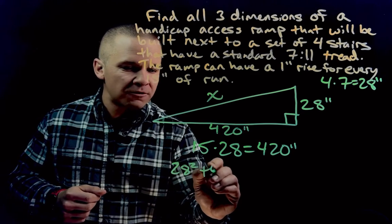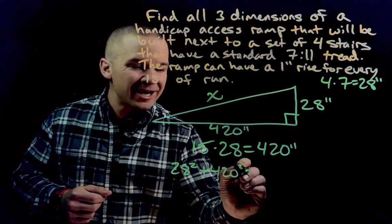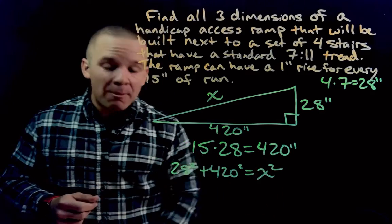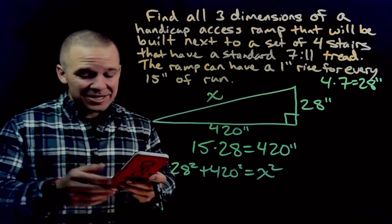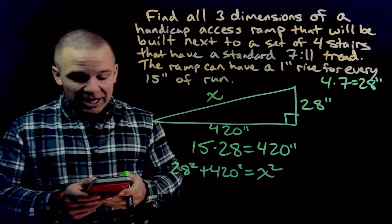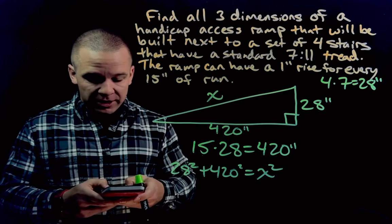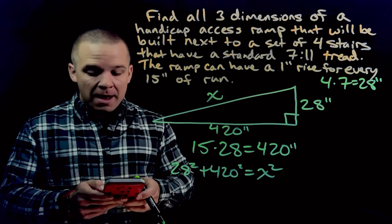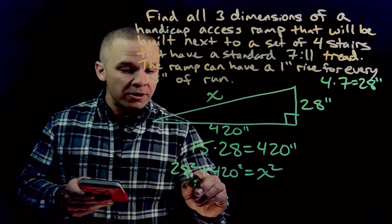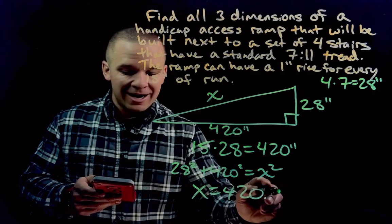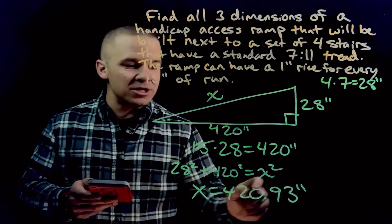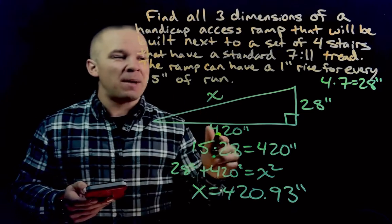I'm going to have 28 squared plus 420 squared equals X squared. I'm going to plug that into my calculator because these numbers are getting a little crazy. So I got 28 squared plus 420 squared, and then I'm going to square root that. And I'm going to get 420.93 inches for that last measurement of my ramp.